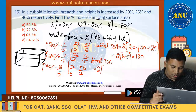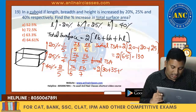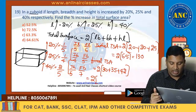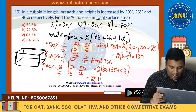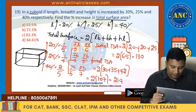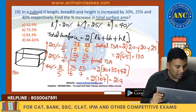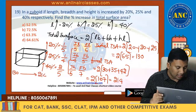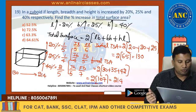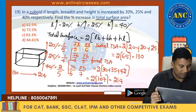Final total surface area: it is 2 into (LB + BH + HL) with new values. 6 × 5 = 30, 7 × 5 = 35, 7 × 6 = 42. So 2 into (30 + 35 + 42) = 2 into 107 = 214. Initial value is 130, final value is 214.